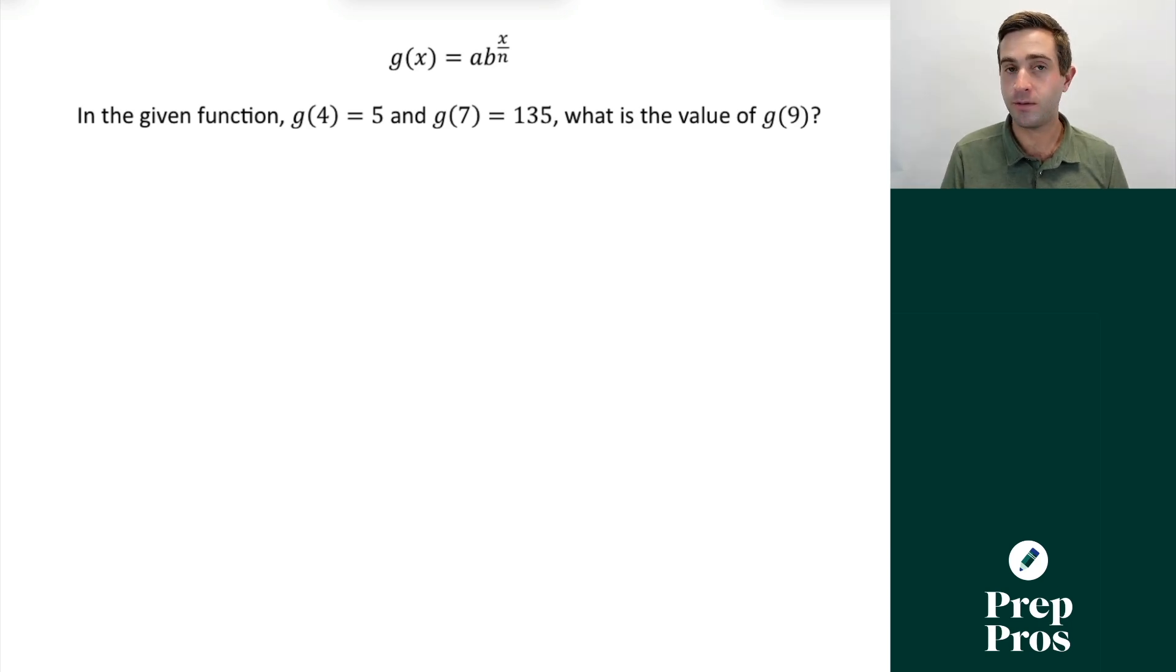All right, so here we see in the given function g(4) = 5 and g(7) = 135. What is the value of g(9)? Now, strategically, when we see a question like this, the first thing I think about is number one, we're given x and y values or g(x) values. So we're probably going to want to plug those in. And also, we have multiple variables here. So this is probably in some way going to be a game of substitution for us to work through. So see if you can figure this out on your own. But I'm going to start walking through this here.